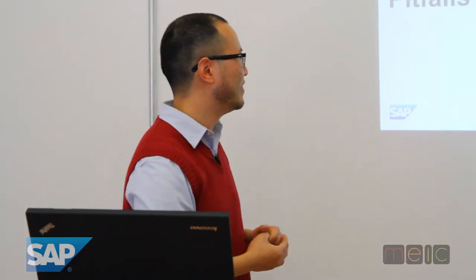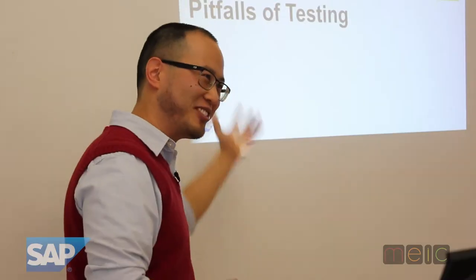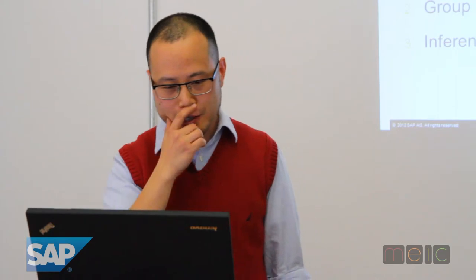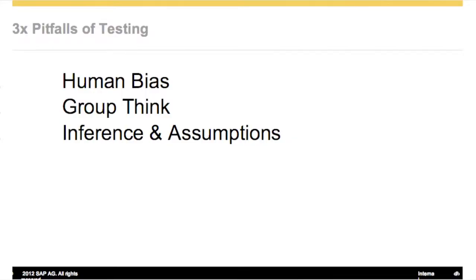So let's go through a fun thing - people always love picking on things, so let's go pick on testing. Let's look at some pitfalls of testing. These are three that I came up with that are pretty high on the list. For sure there are lots of other ones, but let's take a look at the first one. The first one is human bias.